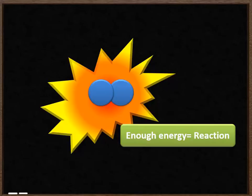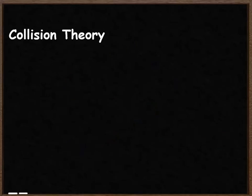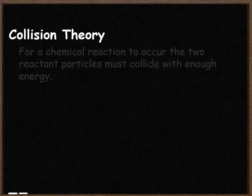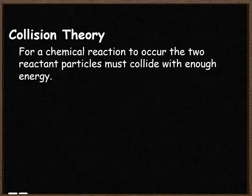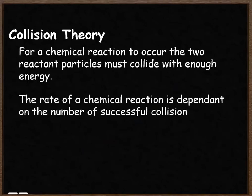We call that amount of energy the activation energy. This idea is what we call collision theory. It states that for a chemical reaction to occur, the two reactant particles must collide with enough energy — the activation energy. The rate of the chemical reaction is dependent on the number of successful collisions, where the two particles collide with that activation energy, with enough energy for the reaction to occur.